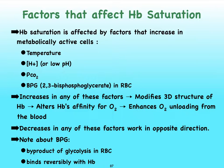There are four factors that impact hemoglobin saturation: temperature, pH, the partial pressure of carbon dioxide, and then a byproduct of glycolysis in our red blood cells called BPG, which stands for 2,3-bisphosphoglycerate. We'll just refer to it as BPG. Each one of these four factors is going to increase in metabolically active cells.